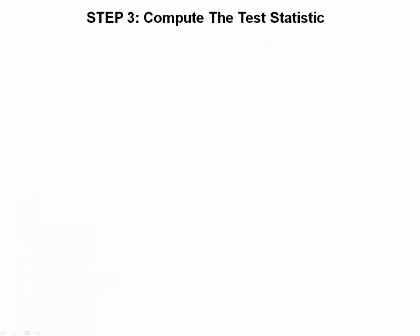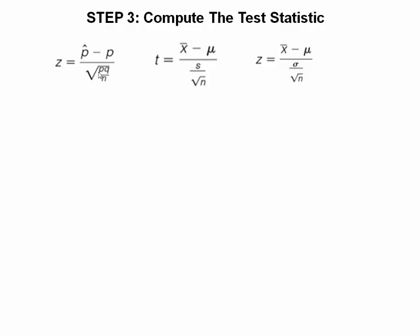In step three, we're going to compute the test statistic. Here are what we term the test statistics. We have already seen these formulas before when we were working with confidence intervals. We have three test statistics that we're going to be relating in this topic. All require pieces to solve for t or z. In the first case, we have a population proportion.